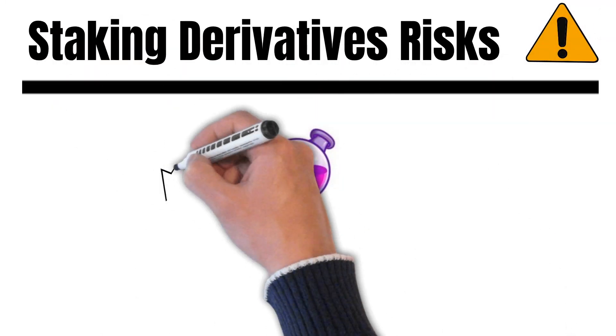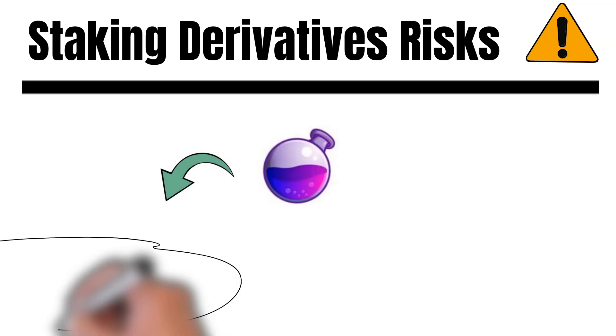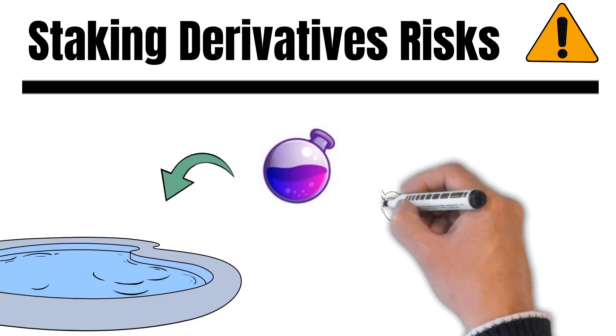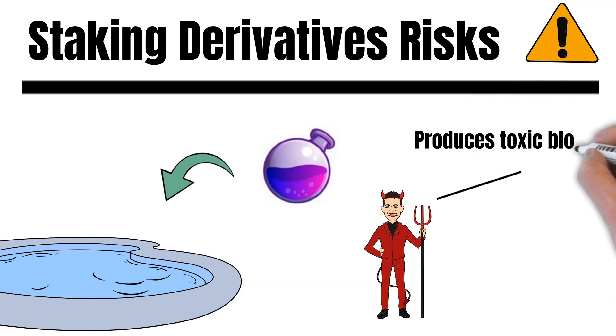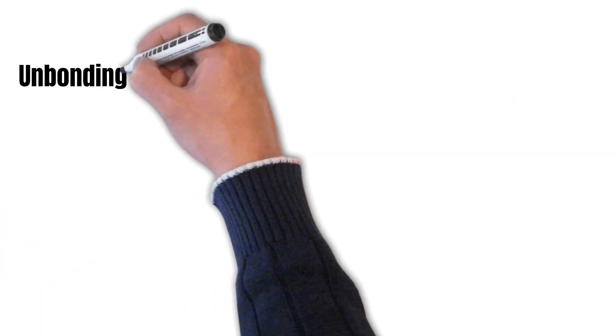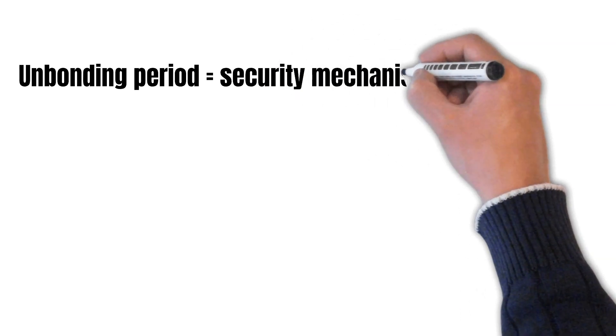Let us assume a user puts Osmosis into a staking pool, but then decides to produce toxic blocks. Nothing much would happen at first, because the malicious user would not be able to get his Osmosis out of the staking pool. The reason? The 14 days long unbonding period.